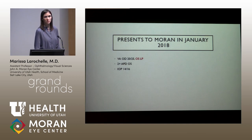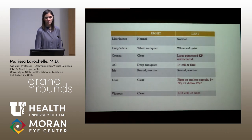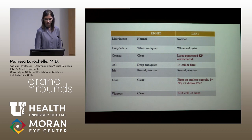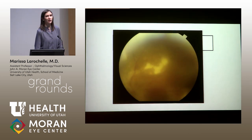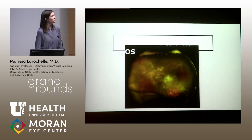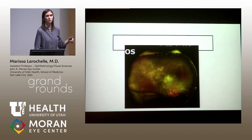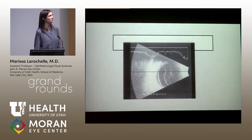Unfortunately, her vision had declined to light perception only with a 2-plus APD. She had mild anterior chamber inflammation, a diffuse PSC cataract from the intravitreal steroids, and diffuse vitritis. The photo shows a very hazy view with multiple confluent areas of retinal whitening and another island of retinal whitening. On the Optos photo, in the infratemporal quadrant there's a vessel that looks elevated, with subretinal fluid and a retinal detachment on ultrasound.